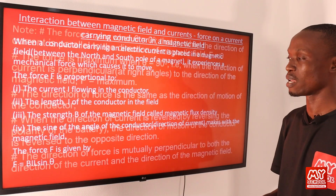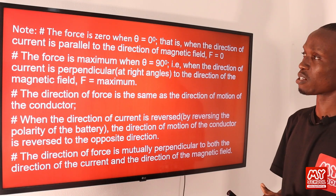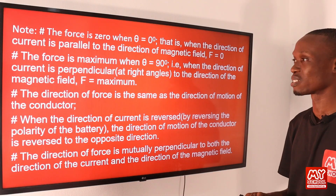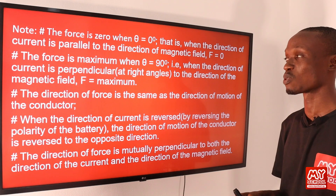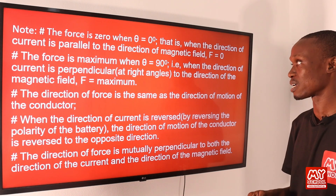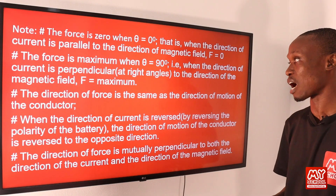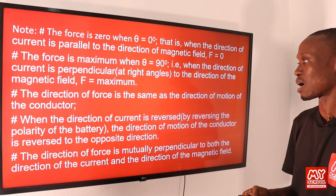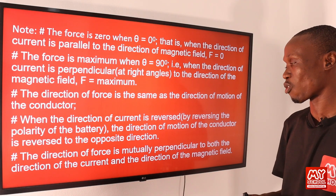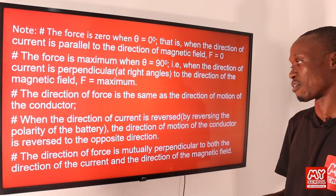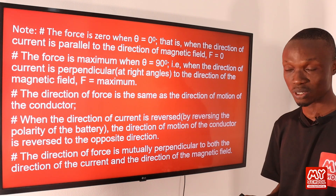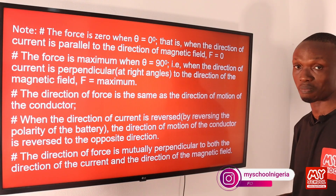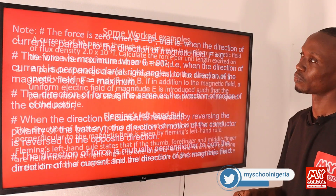Note that the force is zero when θ = 0°, that is when the direction of current is parallel to the magnetic field. The force is maximum when θ = 90°, when the current is perpendicular to the field. The direction of force is the same as the direction of motion of the conductor. When the direction of current is reversed by reversing the battery polarity, the direction of motion reverses. The direction of force is mutually perpendicular to both the current direction and the magnetic field direction.